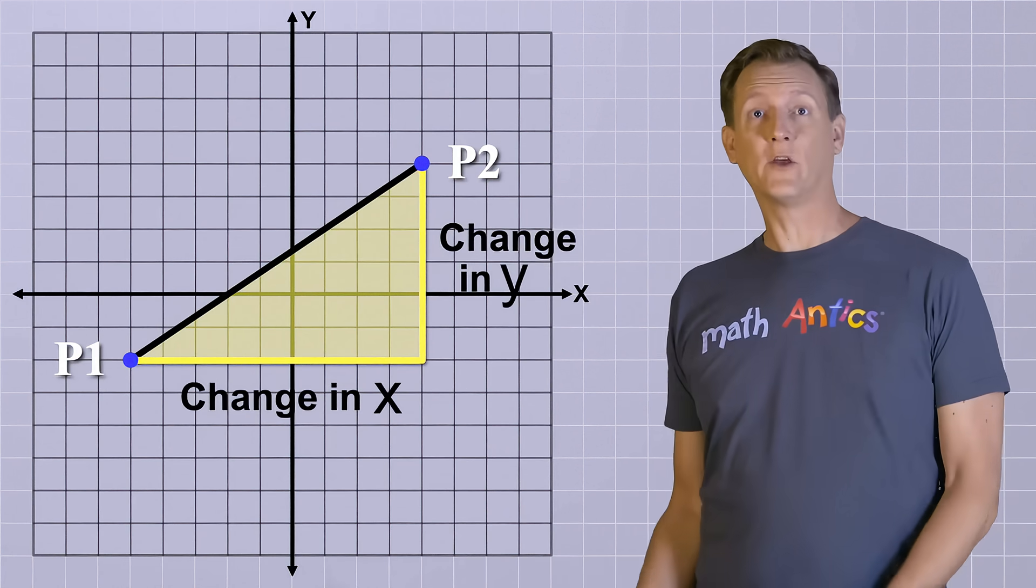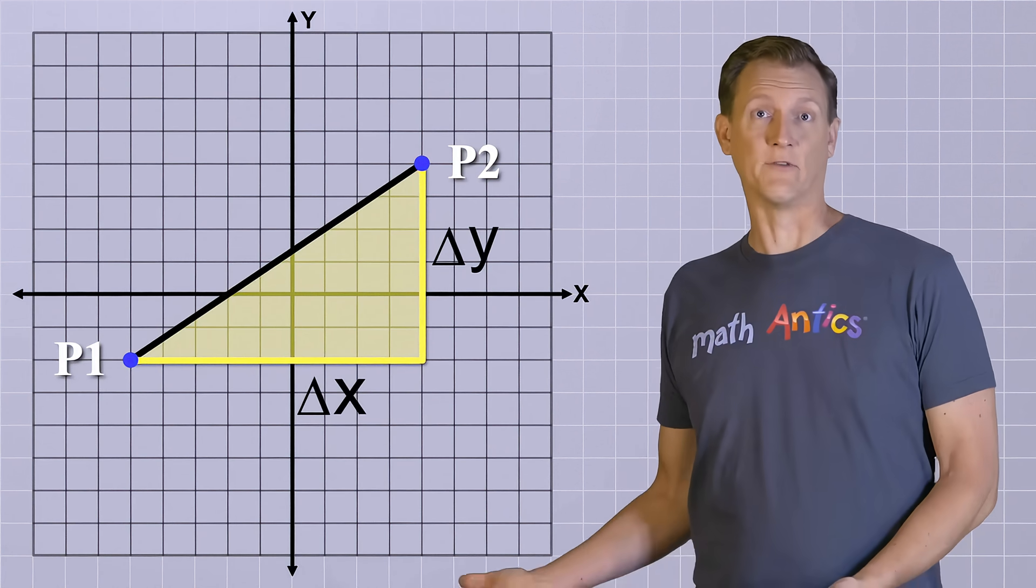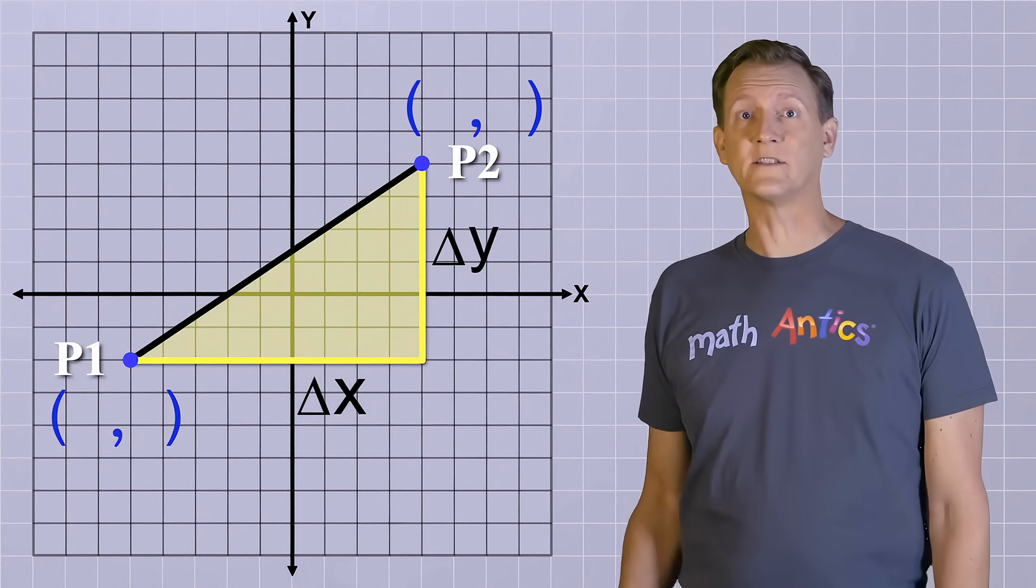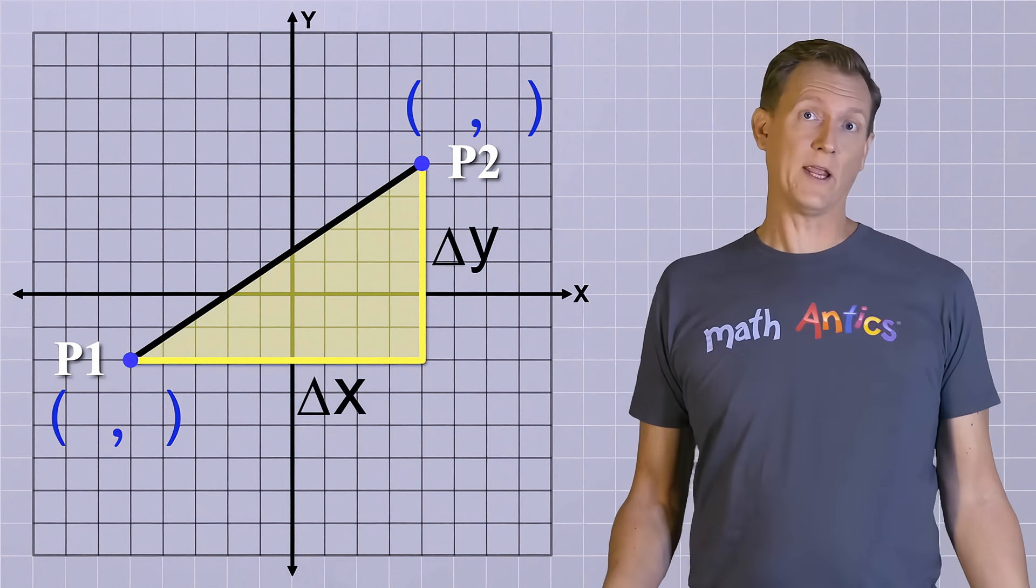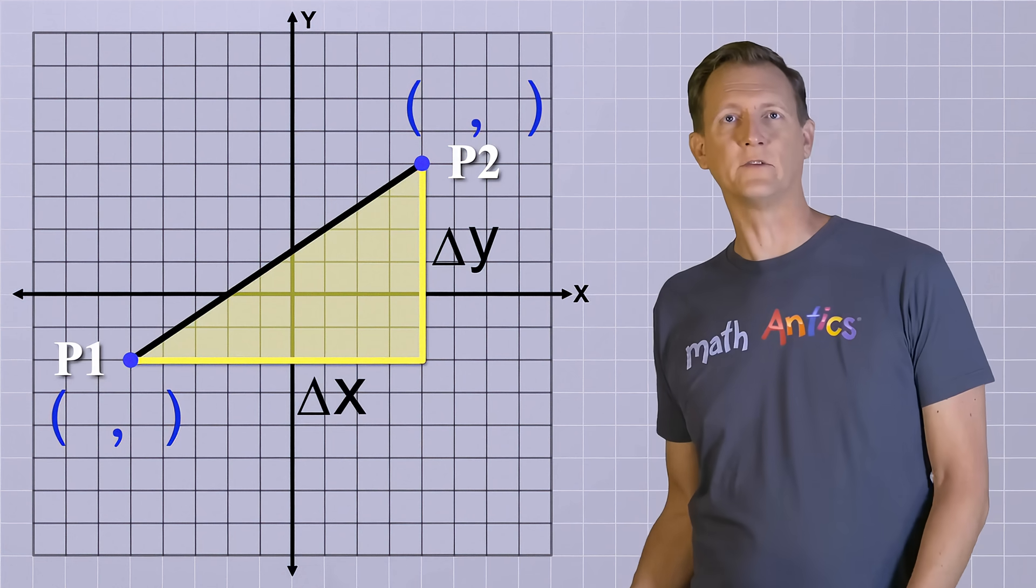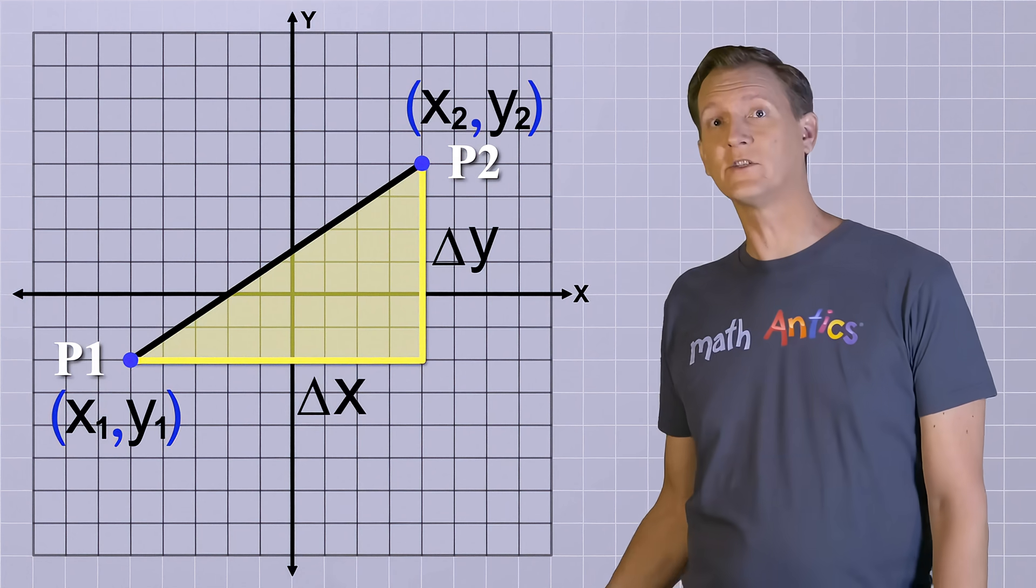Okay, now that we know what those sides represent and we've got nice names for them, how do we actually calculate the lengths of those sides? To do that, we just need the coordinates of the two points that form our line. Since we named them point 1 and point 2, it makes sense for us to call their coordinate values x1 and y1 for point 1, and x2 and y2 for point 2.